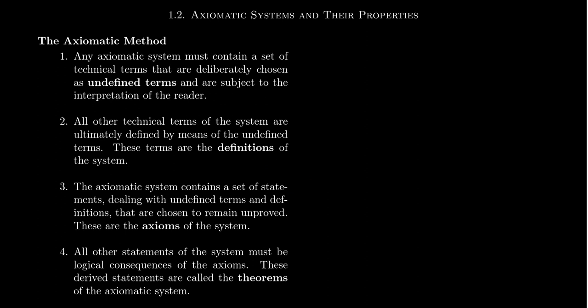The axiomatic system contains a set of statements. Remember from your previous proof writing situation, a statement is a sentence that could be true or could be false. And so these statements, true or false statements, will be dealing with undefined terms or definitions we've created. And so these statements are unproven. These statements, which are called the axioms of the system and thus are the titular topic of the axiomatic method, axioms are going to be statements that are taken to be true without proof. There's no proof to an axiom. It's true because it's an axiom.